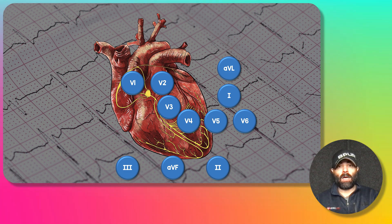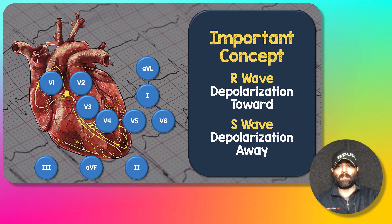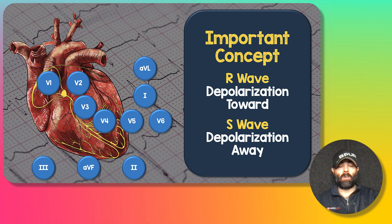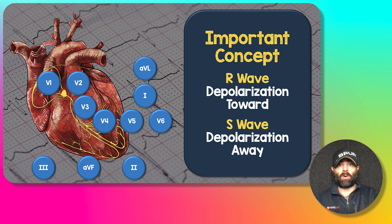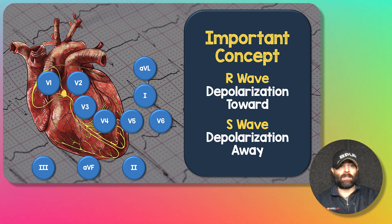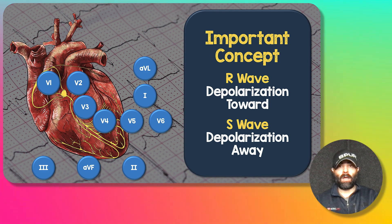An important concept to understand before we go any further is why you get an R-wave versus an S-wave on an EKG. R-waves represent depolarization toward a lead — I like to remember that as 'running towards.' An S-wave is depolarization going away from a lead, which I think of as 'stepping away.' Running towards, stepping away.